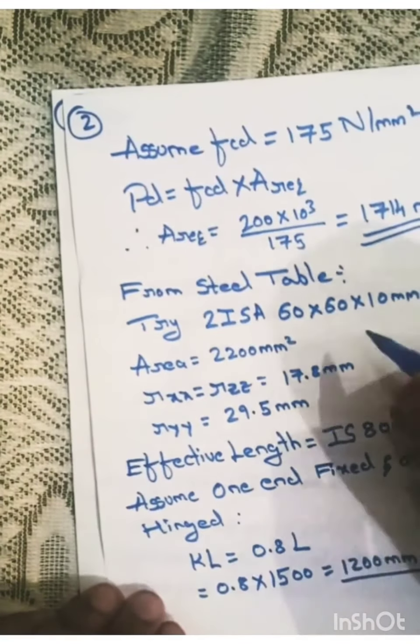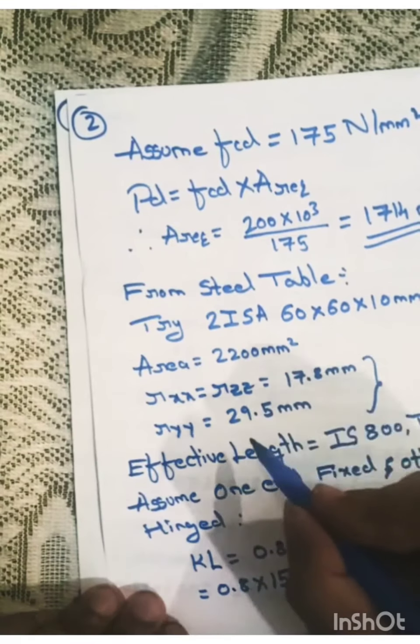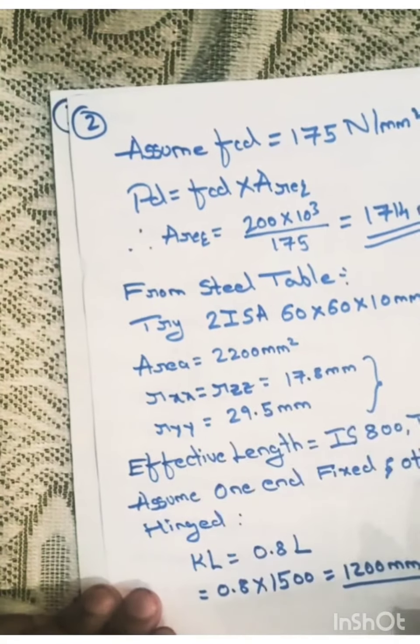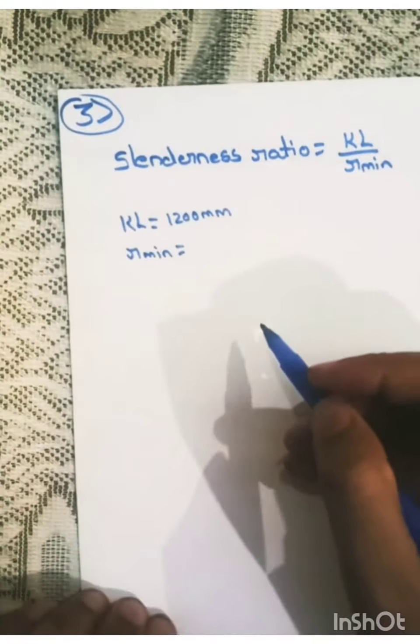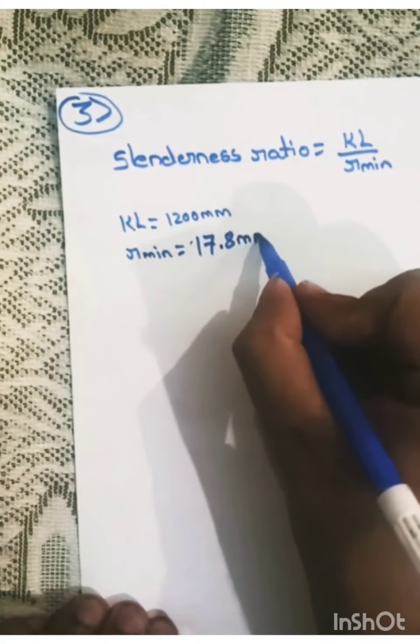and R minimum is the lesser of RXX or RYY. Lesser of these two. So here RXX is 17.8 and RYY is 29.5. So it is 17.8 mm.